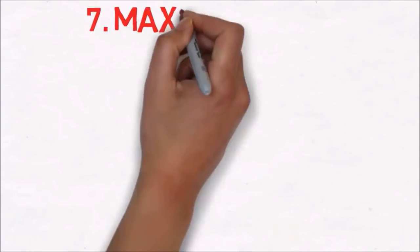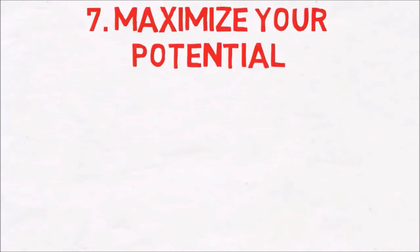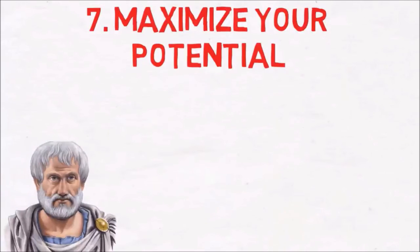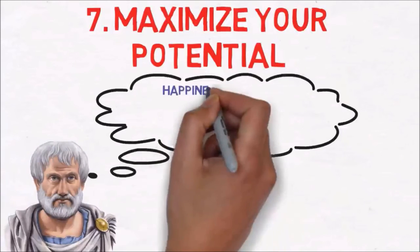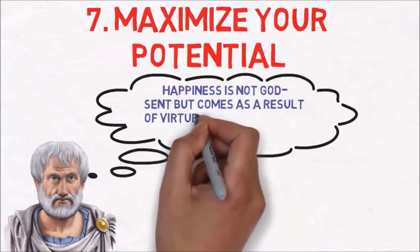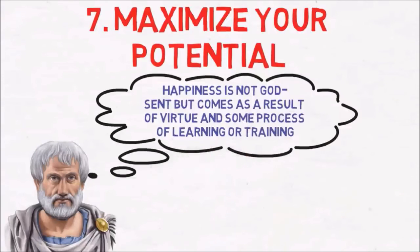Number seven: Maximize your potential through constant learning. In our final quote from Aristotle for this video, he says, happiness is not God-sent, but comes as a result of virtue and some process of learning or training.